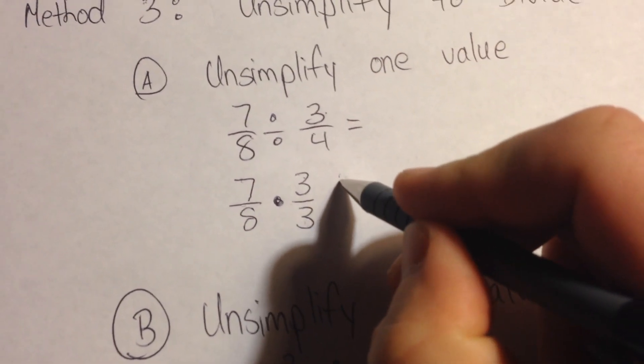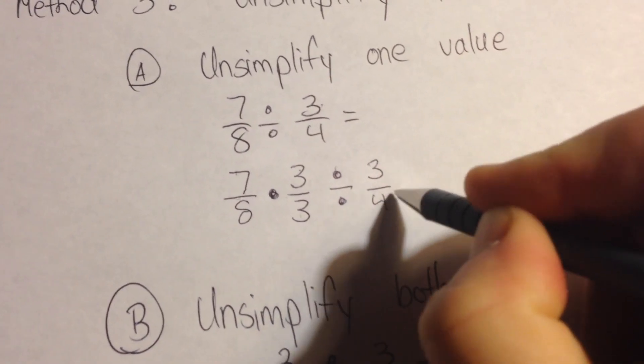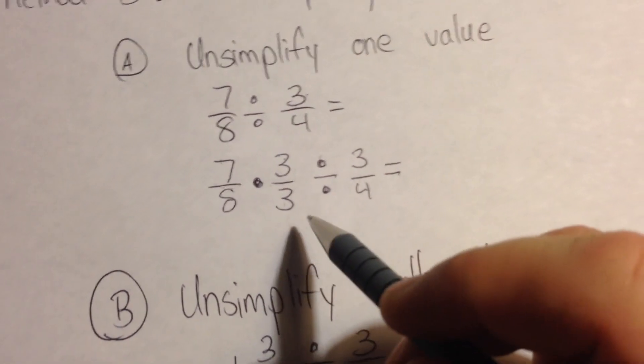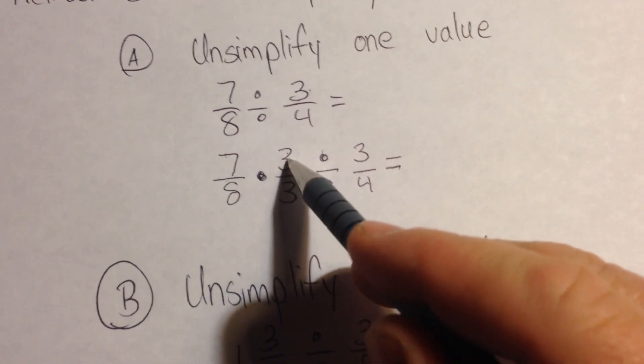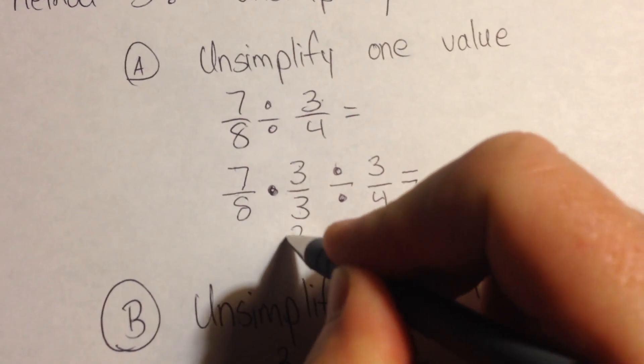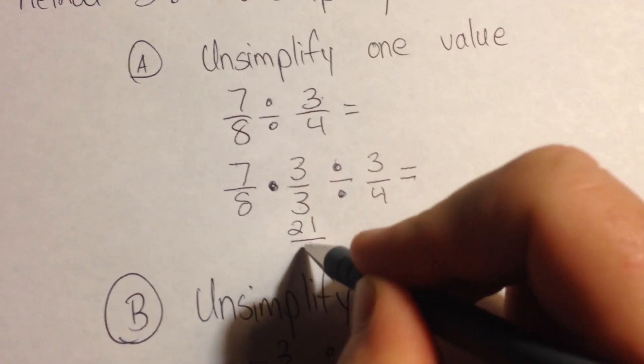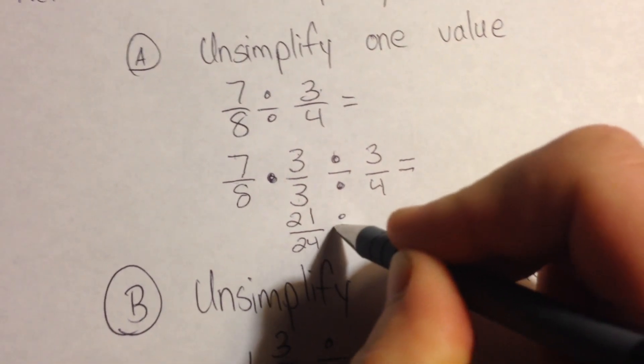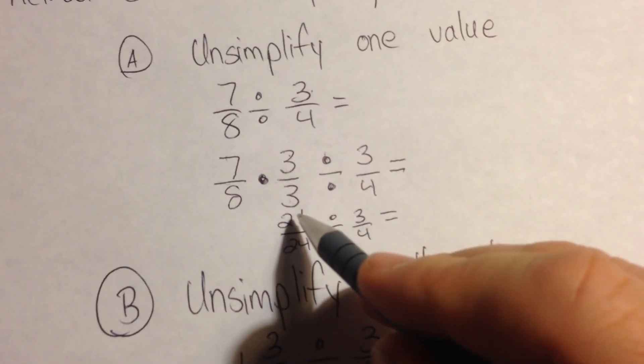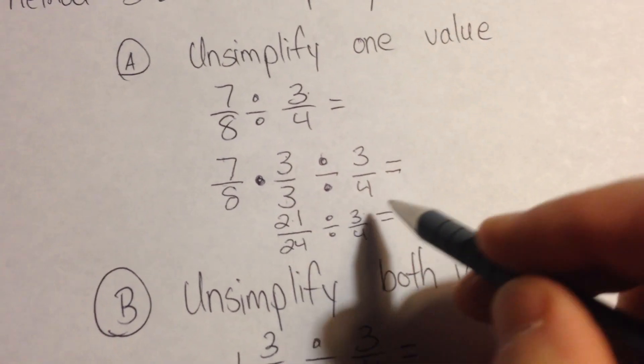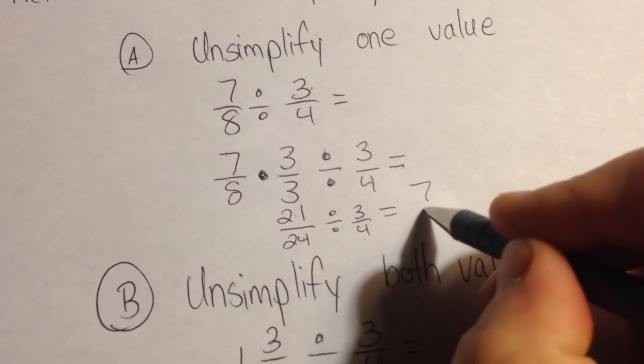And then we write our division, and we're still going to divide by our same fraction, 3 fourths. So now we've created a new fraction that if we multiply 7 times 3, we'll have 21 as our numerator, and 8 times 3 will give us 24 as our denominator. And we're still going to divide by 3 fourths. As we look across, we can actually do our division. 21 divided by 3 is going to give us 7. 24 divided by 4 would give us 6.